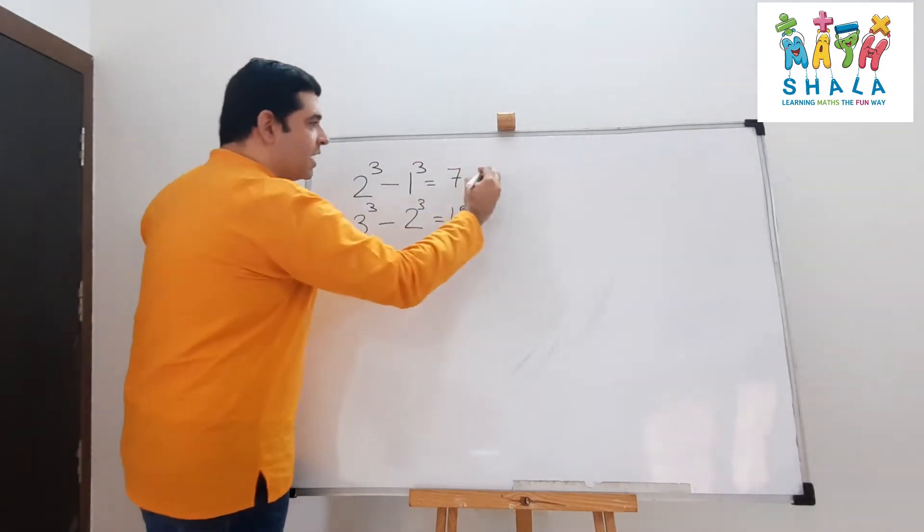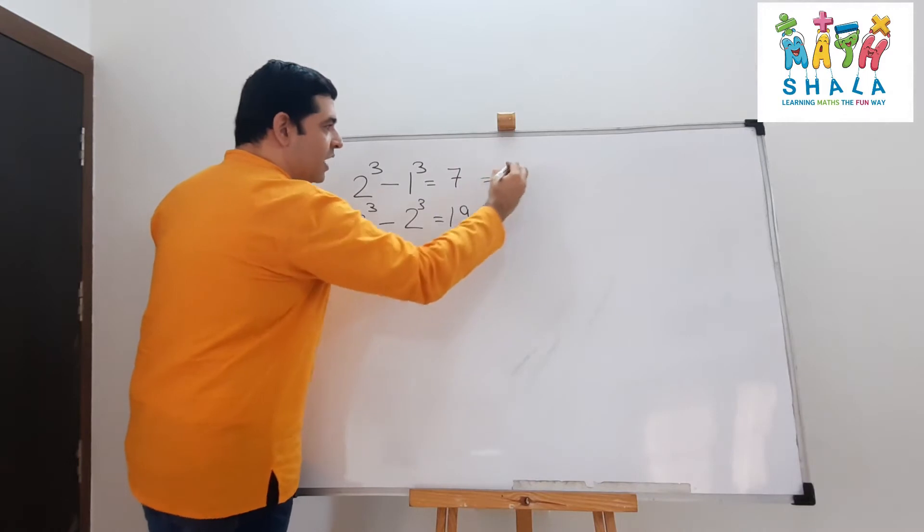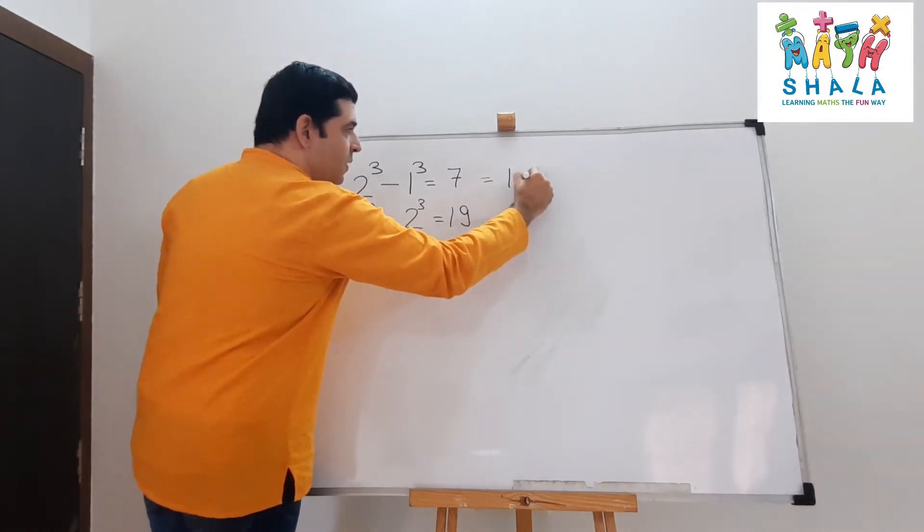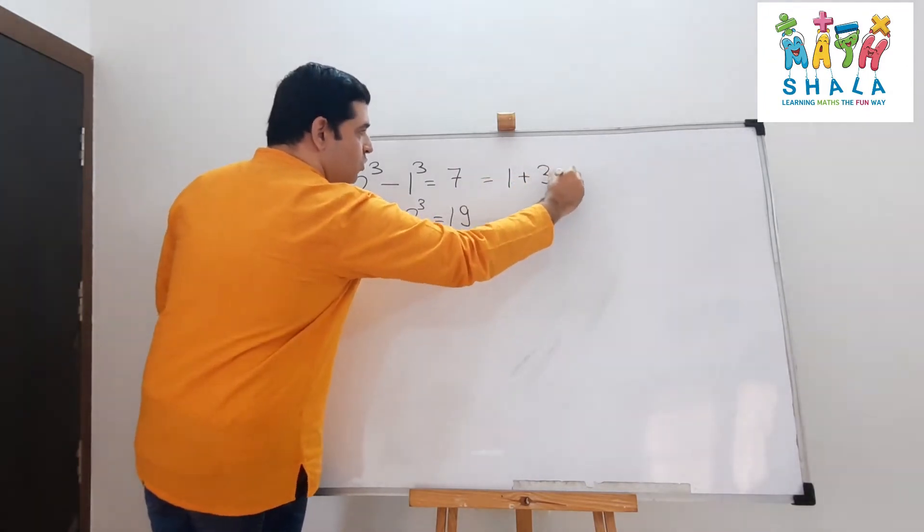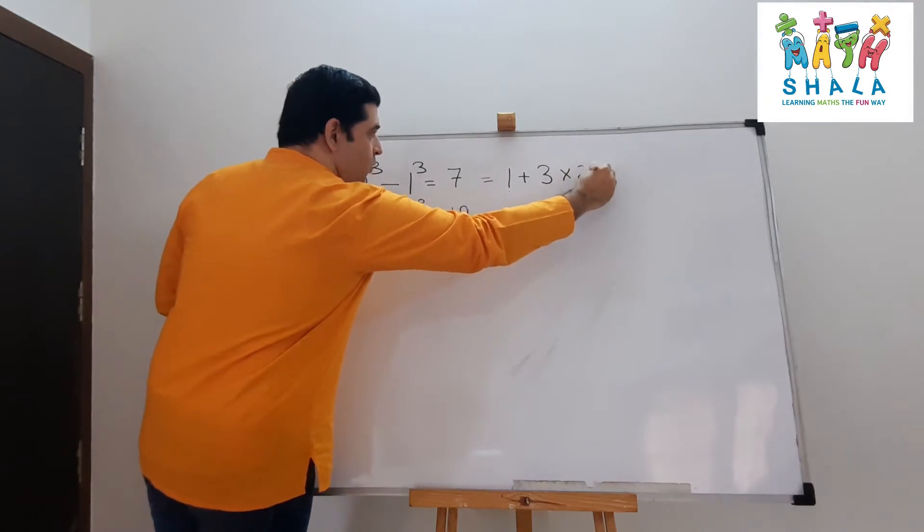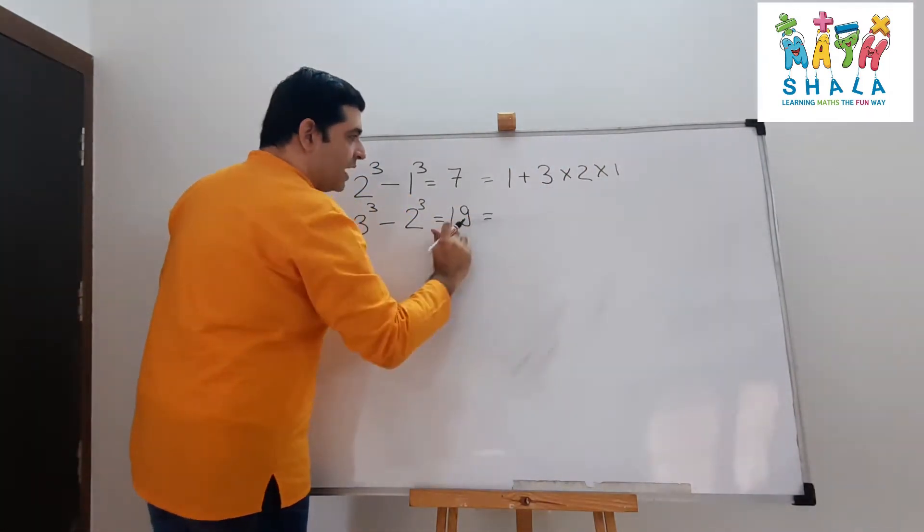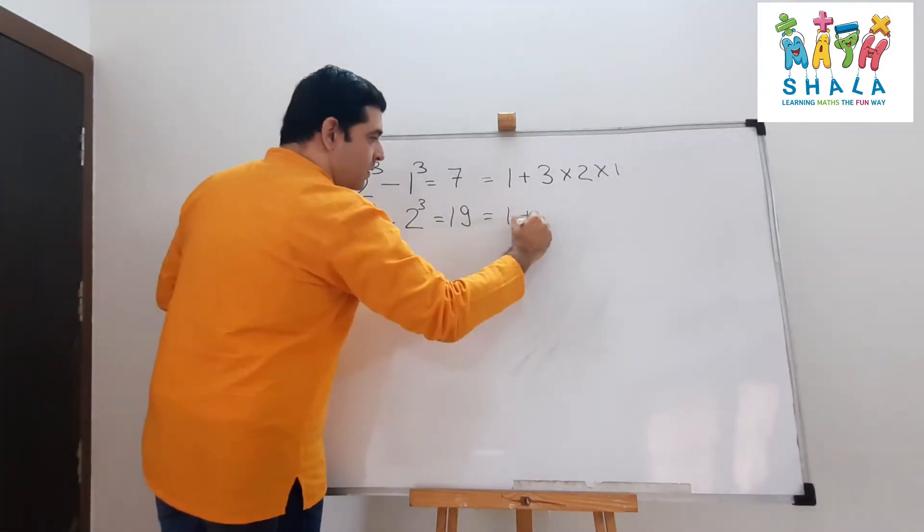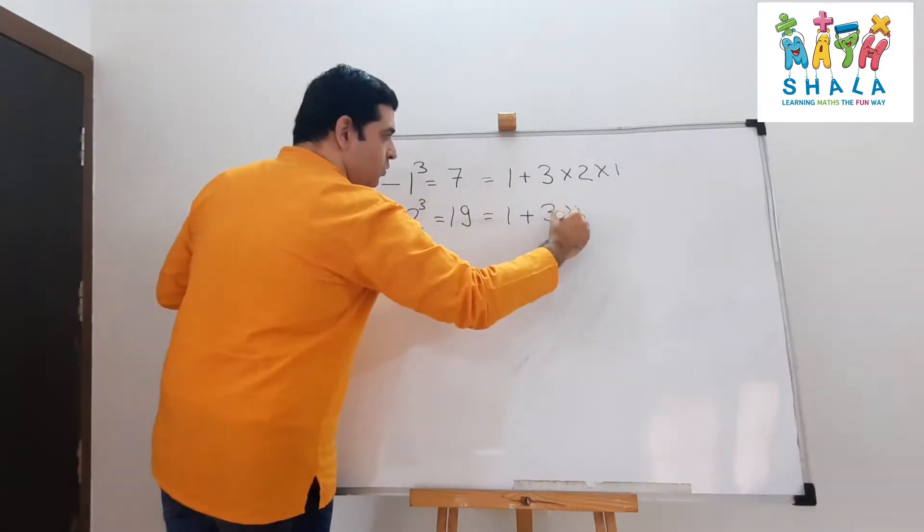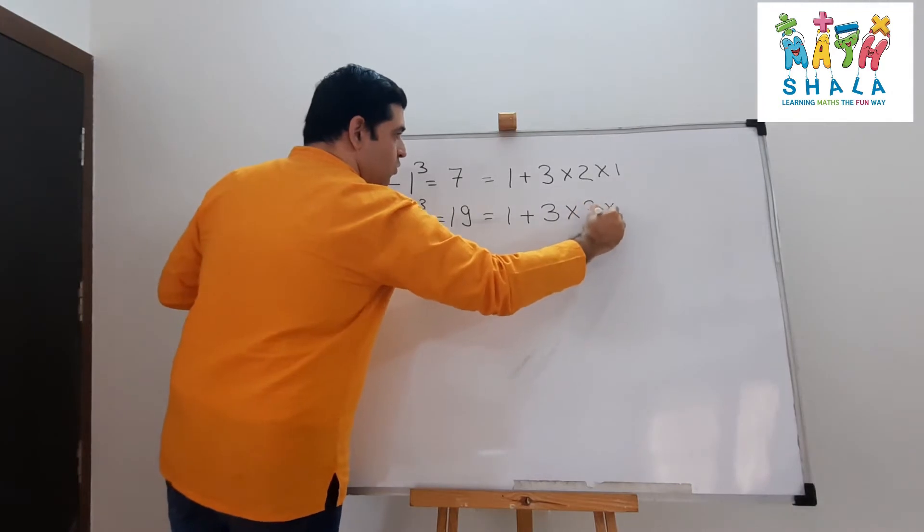Can I write 7 as 1 plus 3 into 2 into 1? And 19 as 1 plus 3 into 3 into 2. Observe carefully.